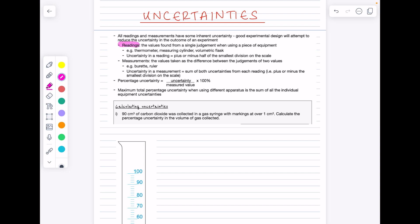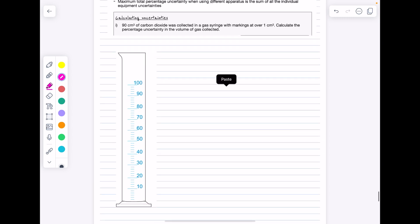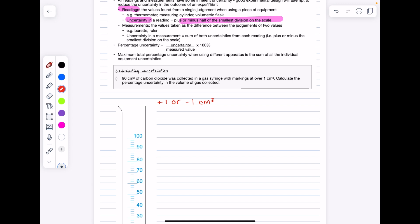A reading is the value found from a single judgment when using a piece of equipment, for example if you read a thermometer temperature reading or the volume from a measuring cylinder. The uncertainty in a reading is plus or minus half of the smallest division on the scale. I'll use this measuring cylinder to illustrate the point. This measuring cylinder is going up in increments of two centimeters cubed, which means the uncertainty here is plus or minus one centimeters cubed because that accounts for half of the smallest division on the scale.